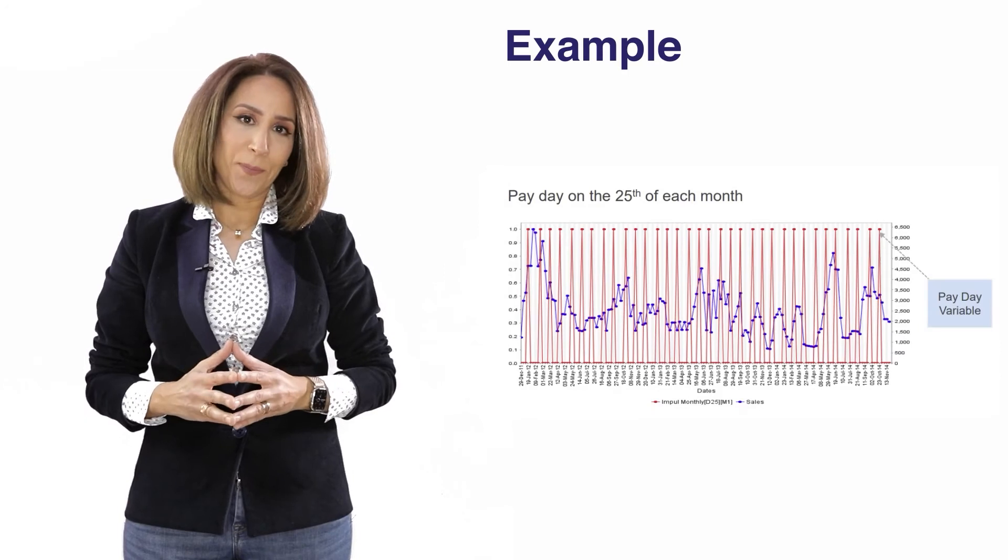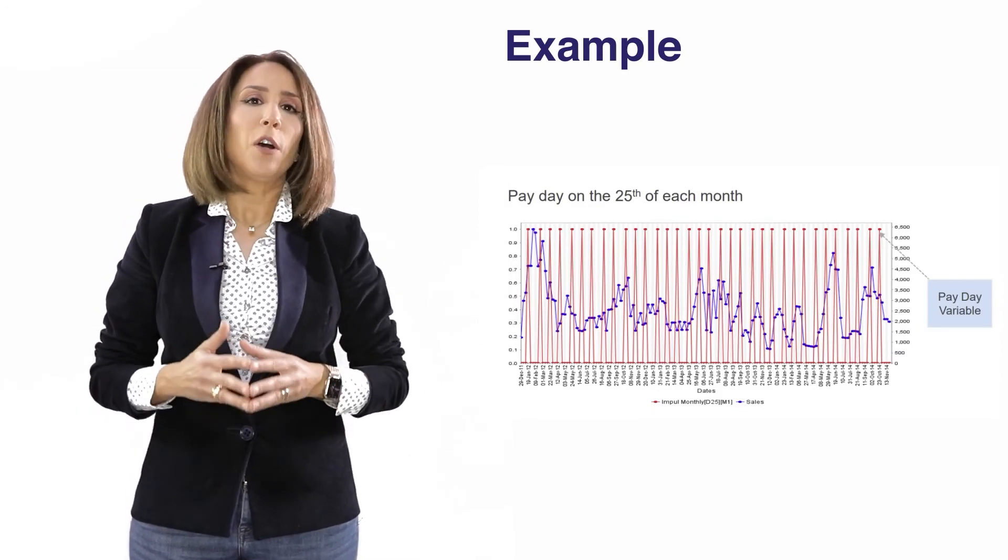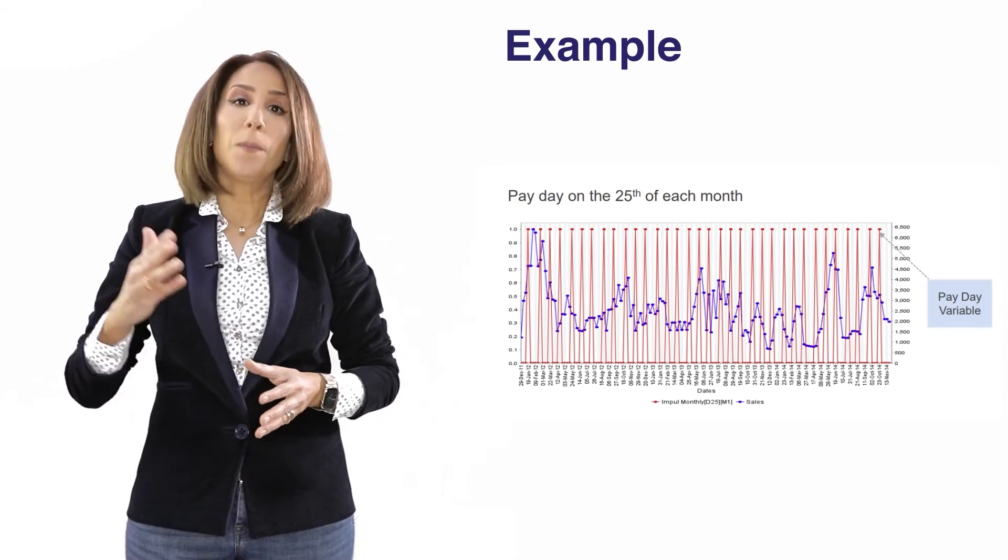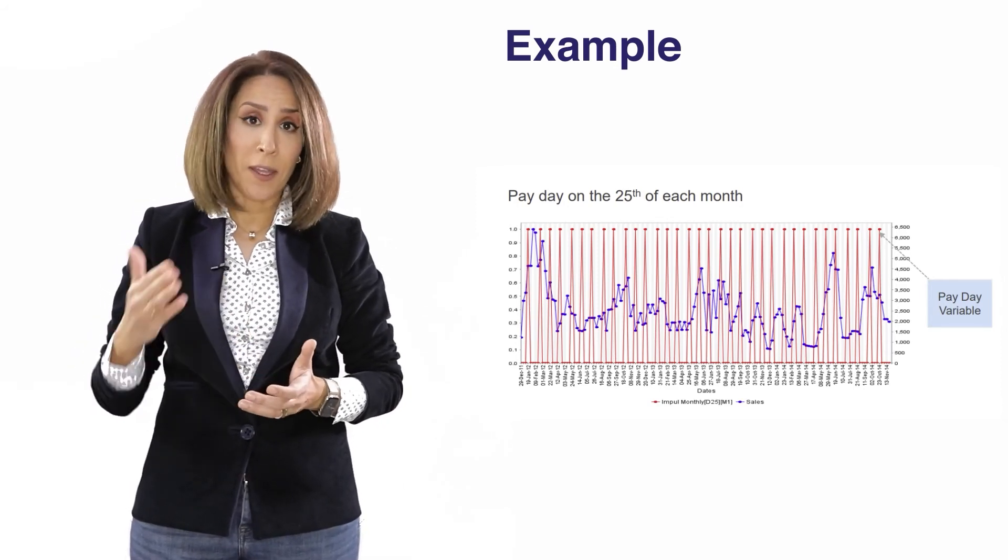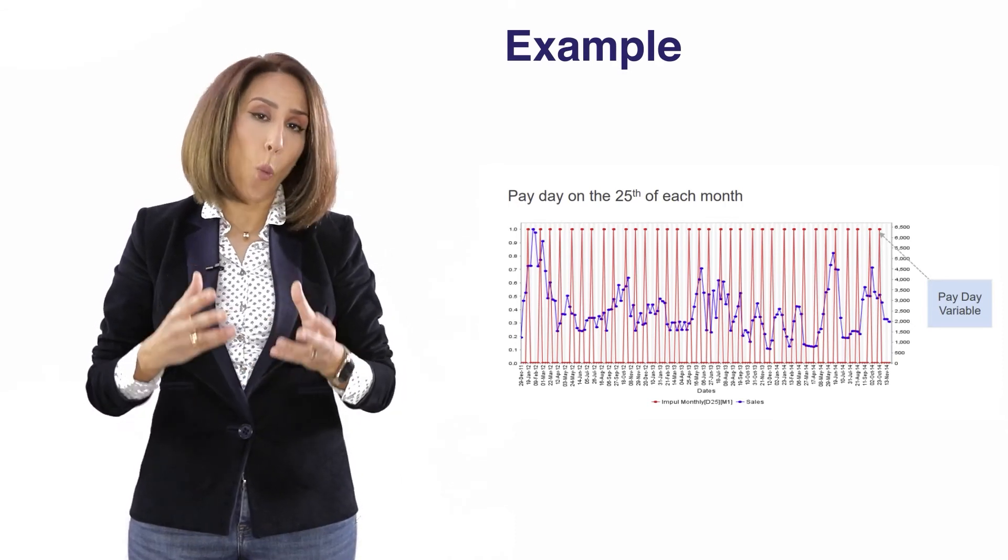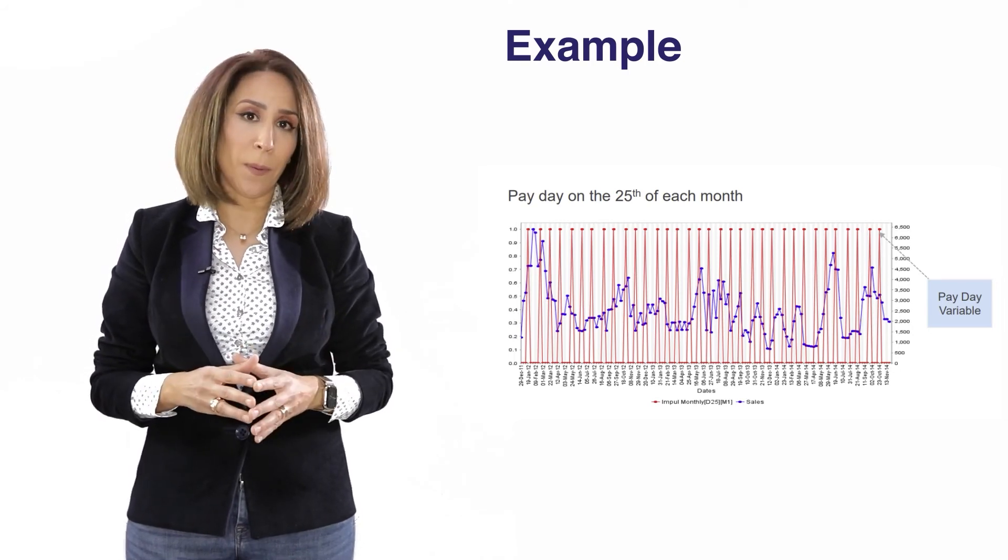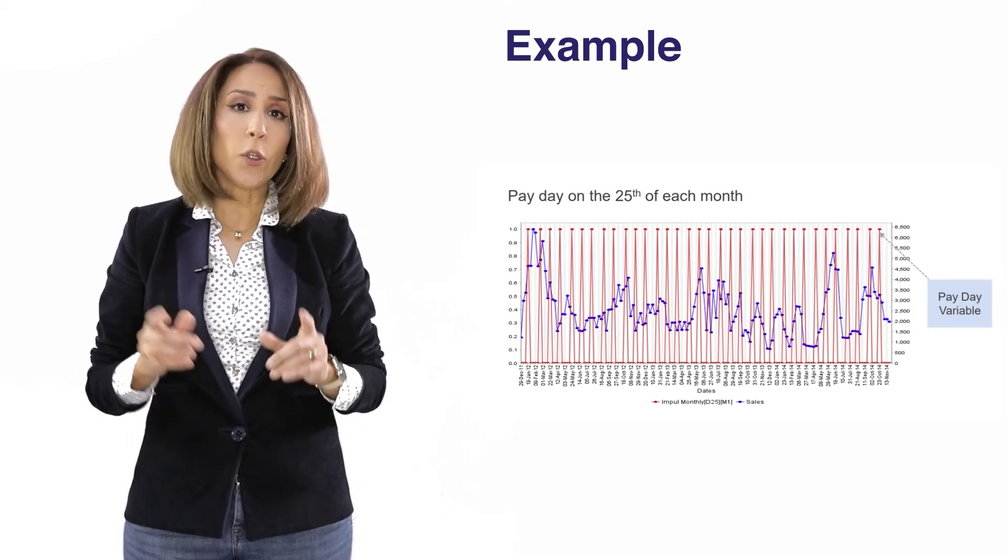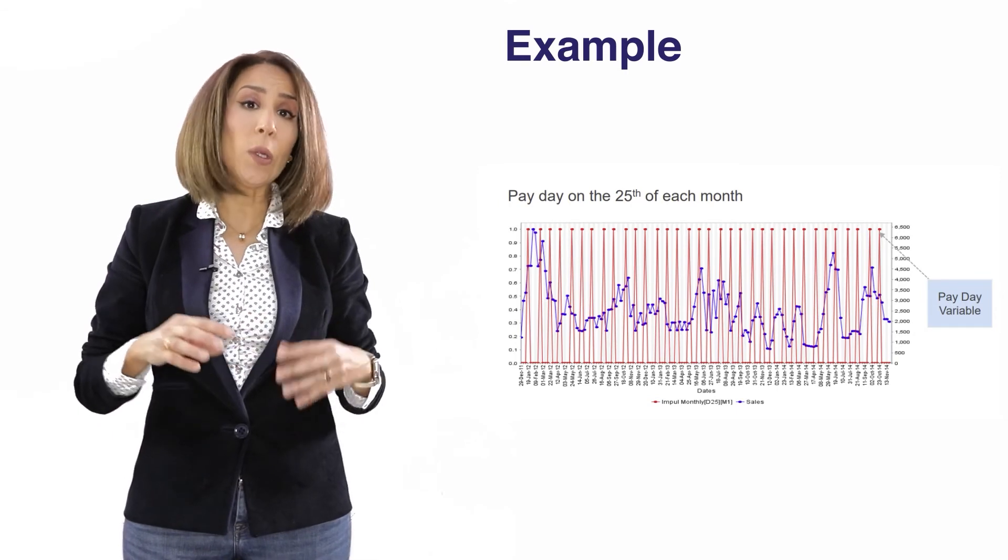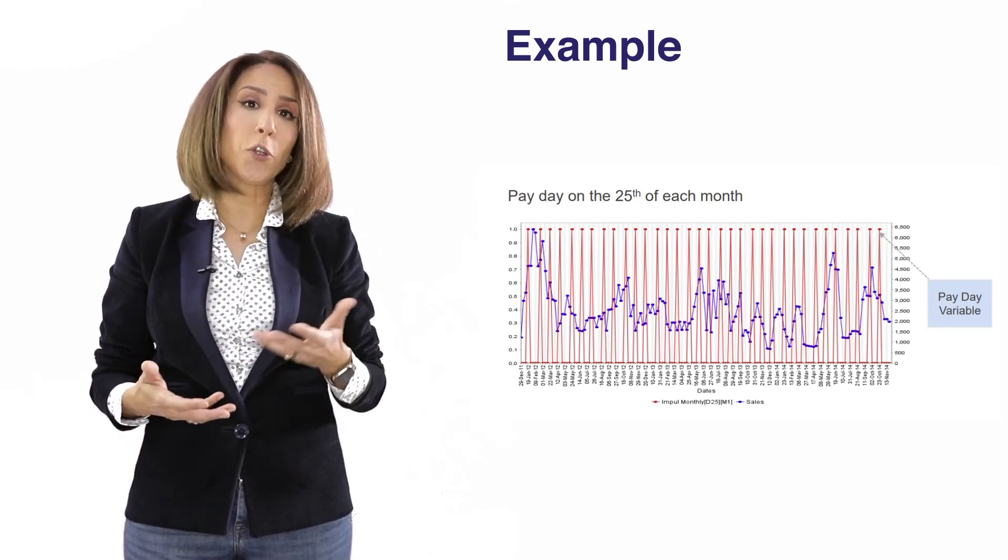For example, payday. Payday generally happens on the 25th of each month. Using the periodic processor, we have created the variable that you can see on the screen and that will take one each time that the 25th of the month happens on that week. Now, later on, using this variable in the model will tell us what is the impact of the payday on your sales.